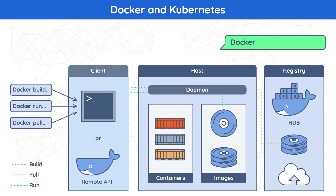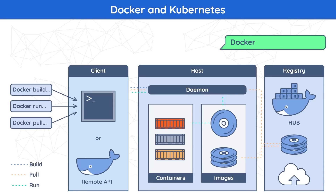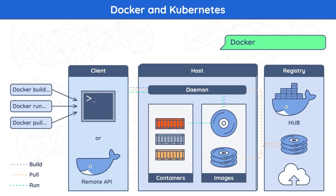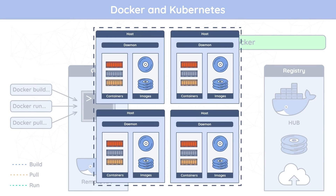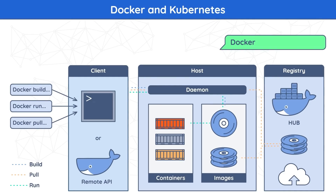The Docker client and daemon can run on the same system, or the Docker client can be connected to a remote Docker daemon. They communicate using a REST API, a network interface, or Unix sockets. There's also Docker Compose, which is another form of a Docker client that lets you work with applications consisting of a set of containers. Let's briefly go over each component of the Docker architecture separately.